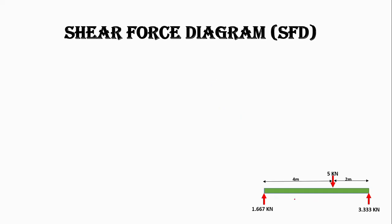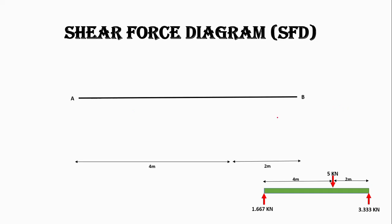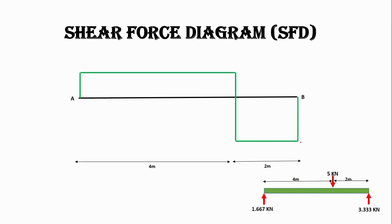Let's draw the shear force diagram using the free body diagram. We have a beam AB of 6 meters with support reaction 1.667 kilonewtons upward at A — we draw a constant line of 1.667 up to 4 meters — then draw a line downward of 5 kilonewtons constant up to B, then draw the 3.33 kilonewton support reaction upward at B. The upper part is positive shear and the lower part is negative shear.